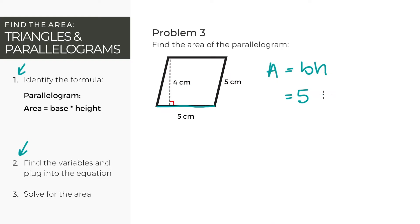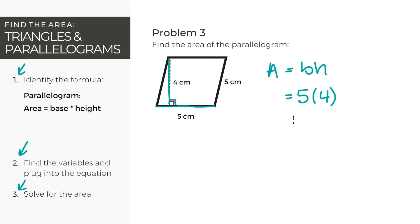And the height, or how tall the parallelogram is, is the length of this line right here that is perpendicular — in other words, 90 degrees to the base. Don't be fooled — it's not the length of the slanted one; it's this line running straight up and down. In our case, it's 4 centimeters. For our last step, let's solve the equation. The area of our parallelogram is the base, which is 5 centimeters, times the height, which is 4 centimeters, and we'll get 20 centimeters squared. That's our answer.